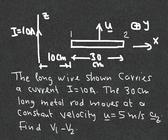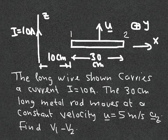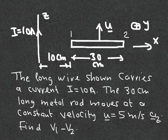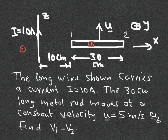Before we start solving, we need to do some analysis. Because the wire is moving in a magnetic field — and that magnetic field comes from the infinite wire — the wire creates circular field lines around it. If I take a point on one side, the field is coming out of the page, and if I take a point on the other side of the rod, the field is going into the page.